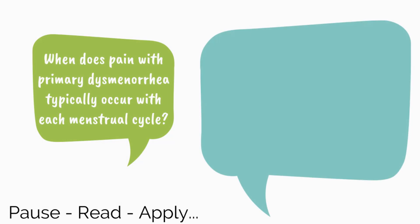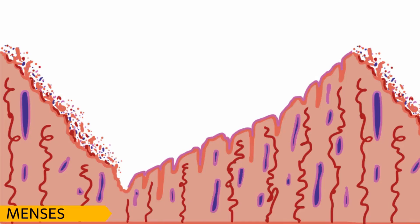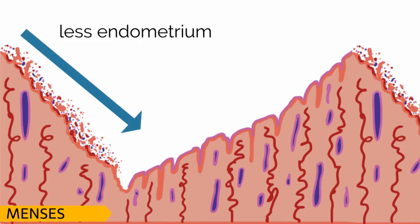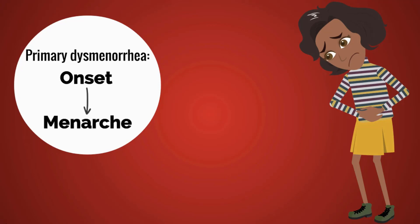When does pain with primary dysmenorrhea typically occur with each menstrual cycle? Pain typically begins right before menstruation, as the level of prostaglandins are high with endometrial sloughing. As menstruation continues and the endometrium is shed, prostaglandins and pain levels decrease. The onset of primary dysmenorrhea in a woman's life often coincides with the onset of menarche, consistent with our patient's history.